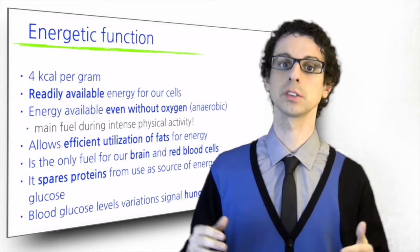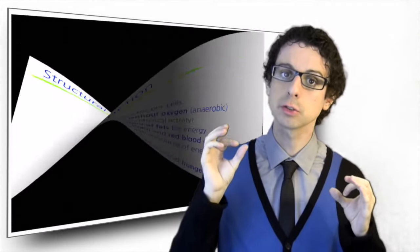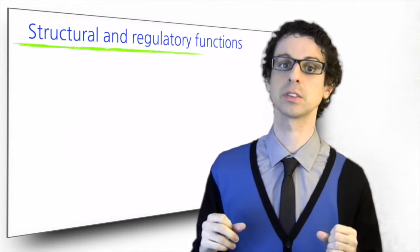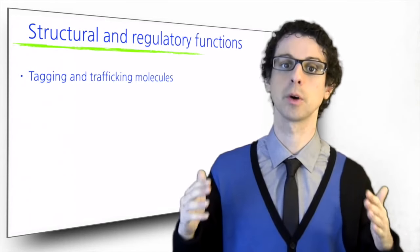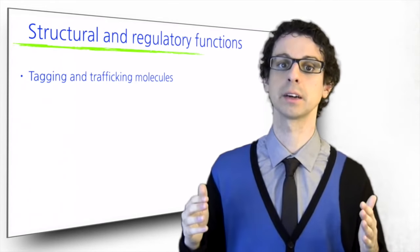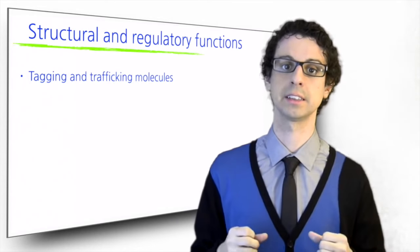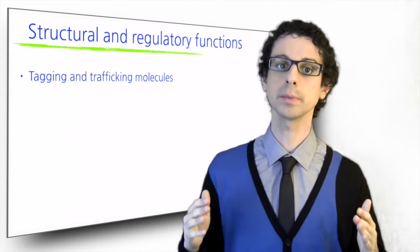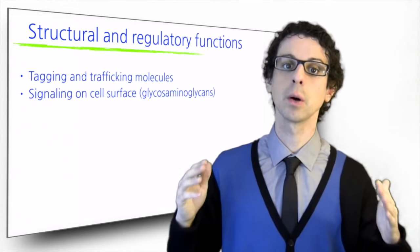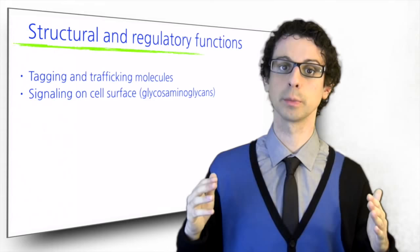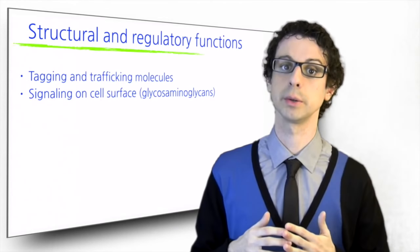Glucose and other sugars also play more fine-tuned structural and regulatory functions in our body. For example, they are often used as tags for molecules to traffic them inside our cells or indicate their destination. They are also part of complex structures on the surface of our cell membranes that play a role in signaling cell-cell communication, recognition and immunity.